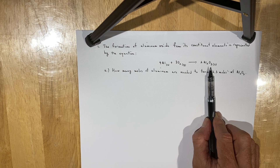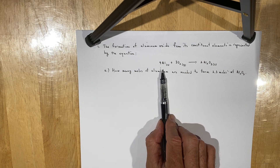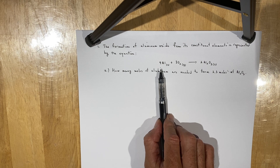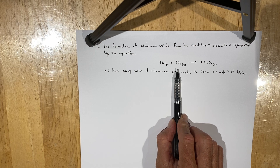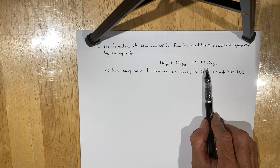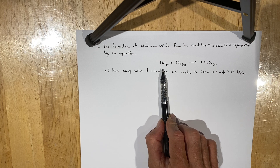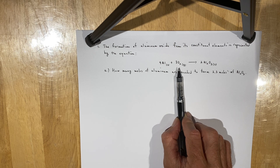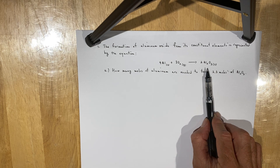There's another way to read this chemical equation. One way is that four atoms of aluminum react with three molecules of oxygen gas to produce two formula units of aluminum oxide. The alternative way is that four moles of aluminum atoms react with three moles of oxygen molecules to produce two moles of aluminum oxide formula units.